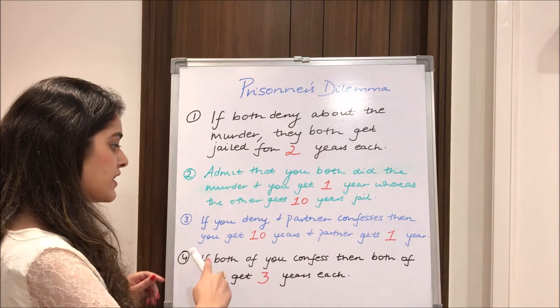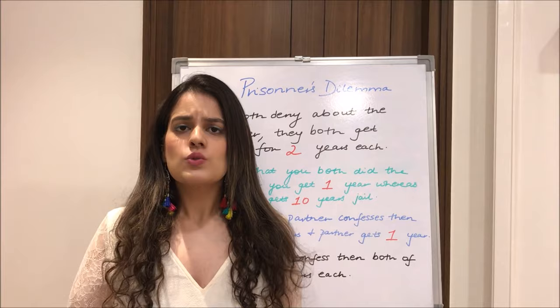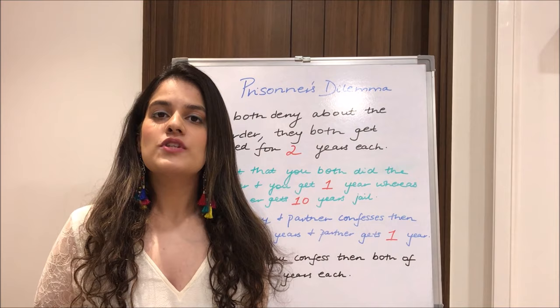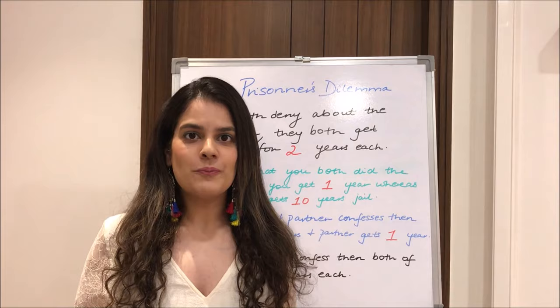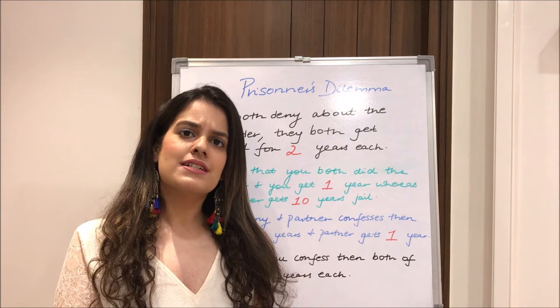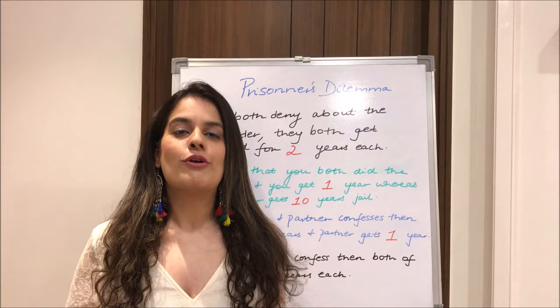Lastly, if both of you confess, both of you get three years each. After hearing all these choices, you might think the prisoners will choose option one — both deny the murder and get two years each — because isn't that the globally optimum scenario? But given the incentives and knowing that they are not friends and have no loyalty toward each other, both prisoners rationally end up choosing the non-optimal scenario. That is what prisoner's dilemma is all about.